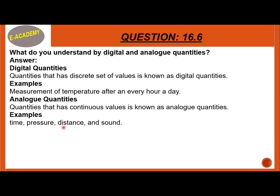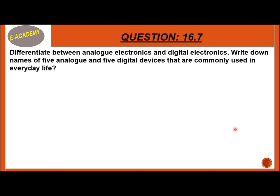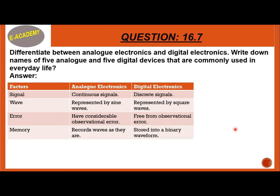Question 16.7: Differentiate between analog electronics and digital electronics, and write down names of 5 analog and 5 digital devices used in everyday life. Analog electronics use a continuous signal represented by a sine wave; digital electronics use a discrete signal. Analog has considerable observational error; digital is free from observational error. Analog records waves as they are; digital stores them in binary waveform.